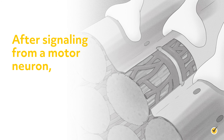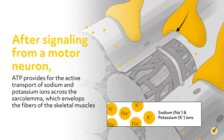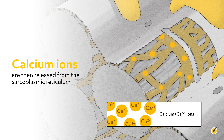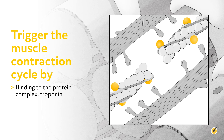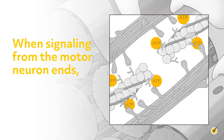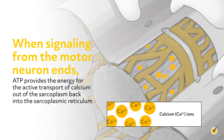Now let's go over the steps involved. Number one: after signaling from a motor neuron, ATP provides for the active transport of sodium and potassium ions across the sarcolemma, which envelops the fibers of the skeletal muscles. Calcium ions are then released from the sarcoplasmic reticulum and trigger the muscle contraction cycle by binding to the protein complex troponin, which exposes the active binding site on actin. Number two: when signaling from the motor neuron ends, ATP provides the energy for the active transport of calcium out of the sarcoplasm and back into the sarcoplasmic reticulum.